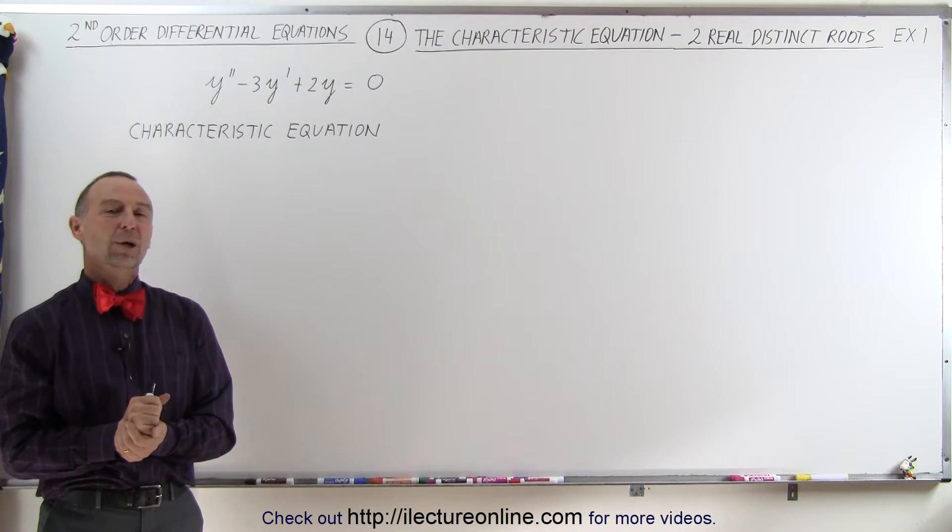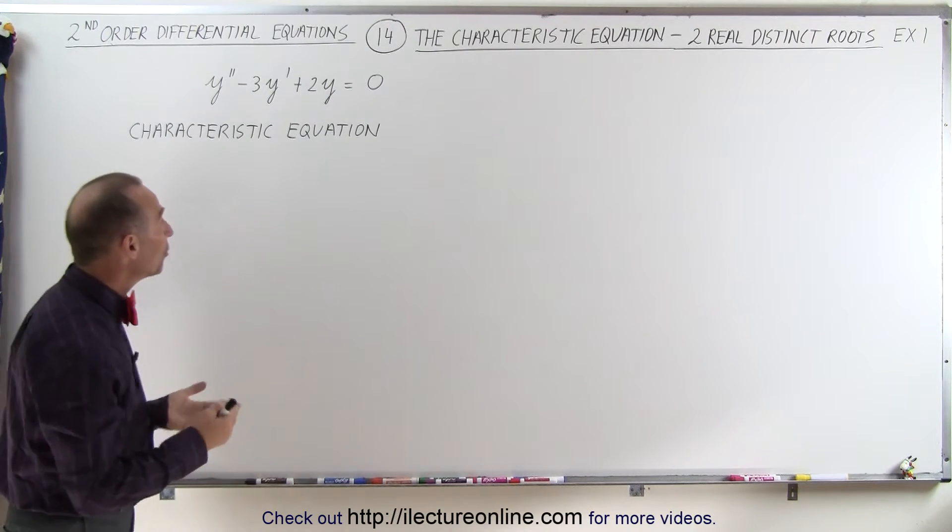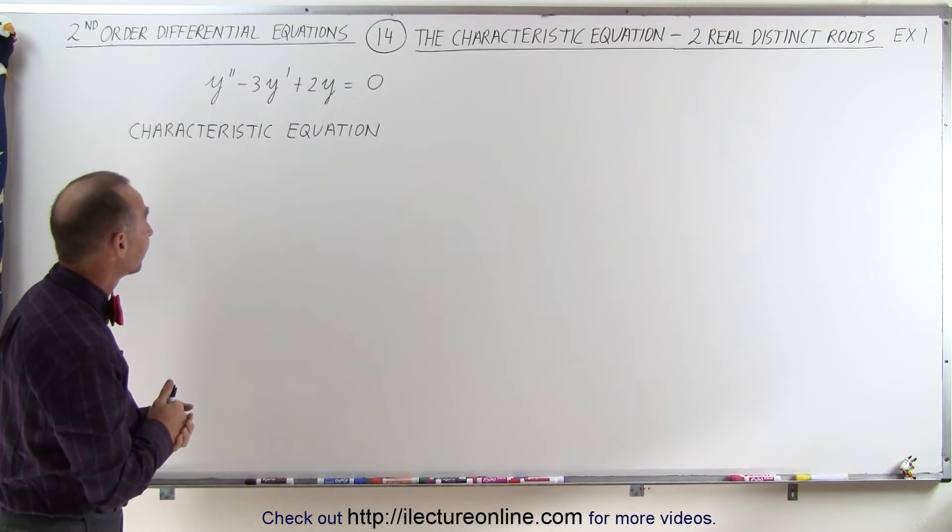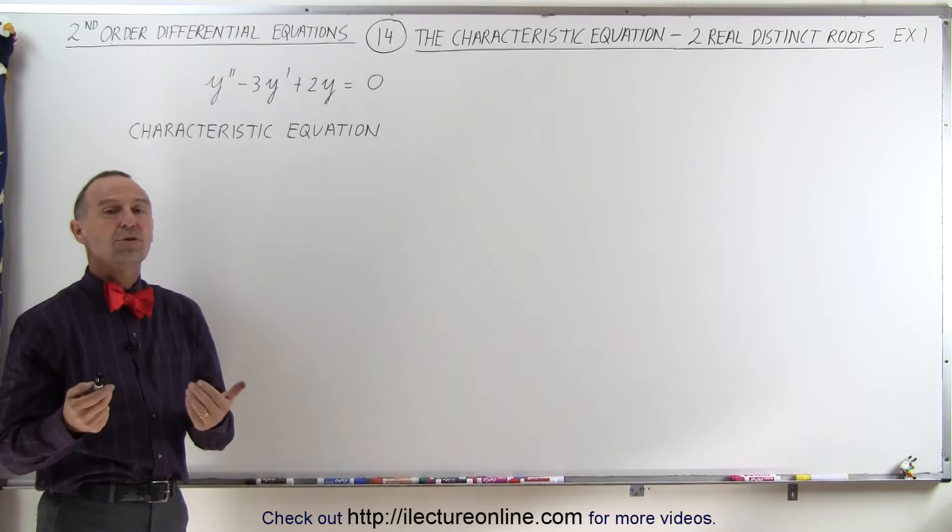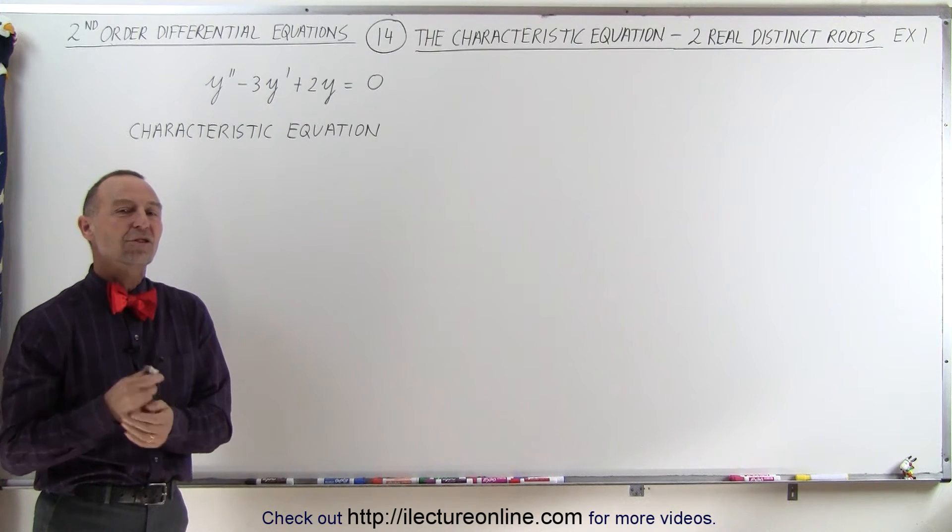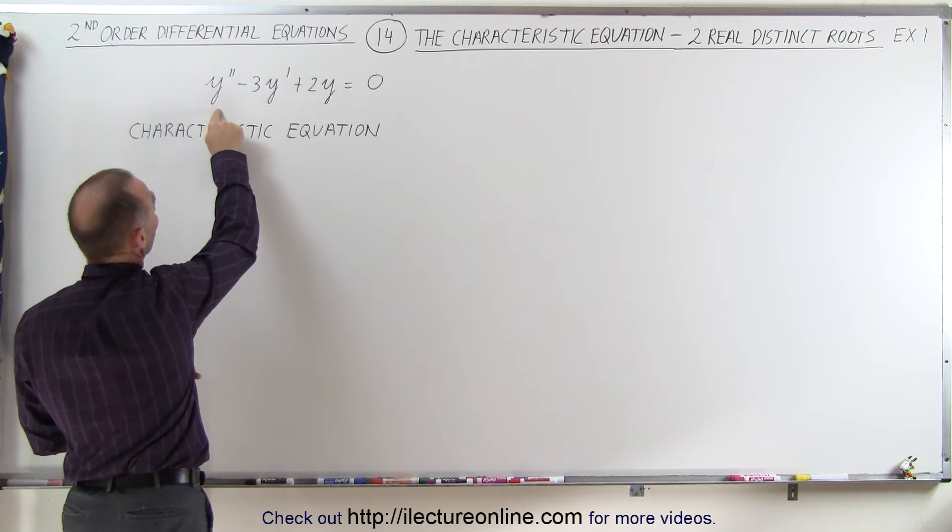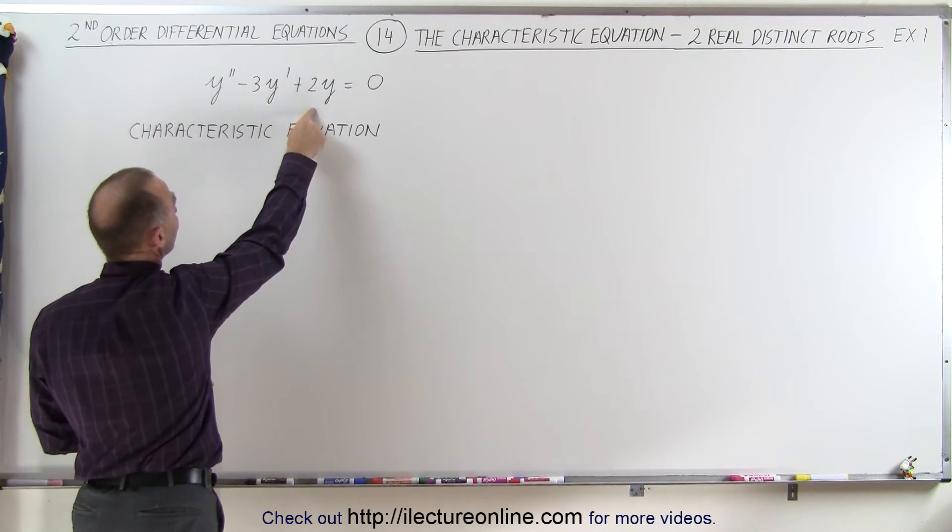Welcome to iLecturOnline. When we start out with a homogeneous second-order linear differential equation, it is easy to solve when we use what we call the characteristic equation and solve that instead. So this looks a lot like x² - 3x + 2.